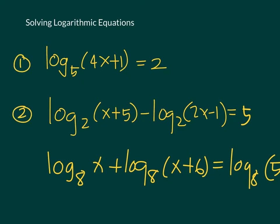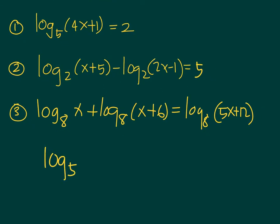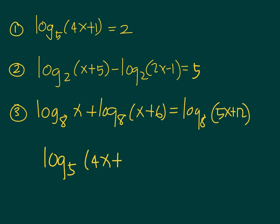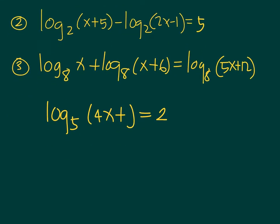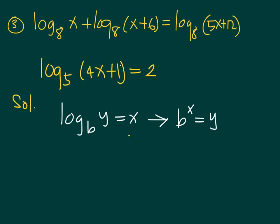For number one — the most basic type — we have log base 5 of (4x+1) equals 2. One possible solution is to immediately convert this logarithmic equation into an exponential equation. You need to know that log base b of y equals x is the same as b to the x equals y. Otherwise, you will not be able to solve log base 5 of (4x+1) equals 2.